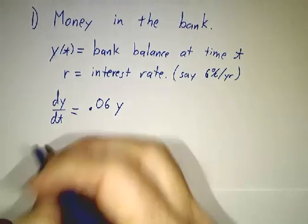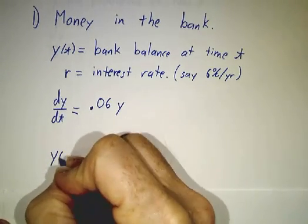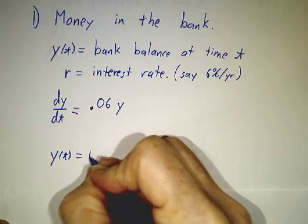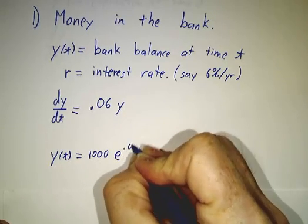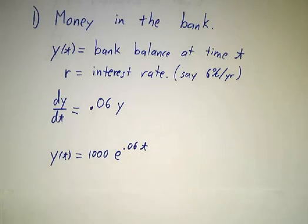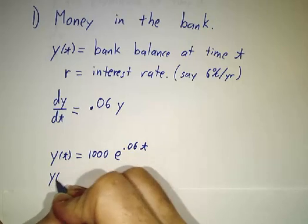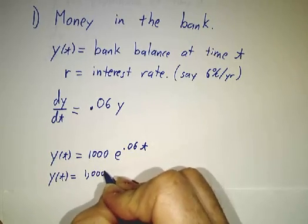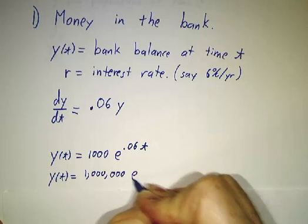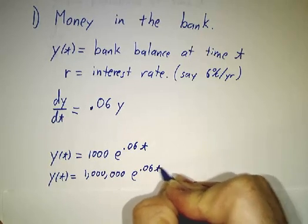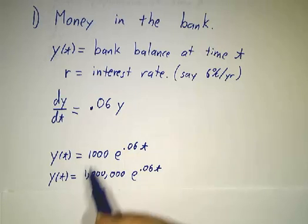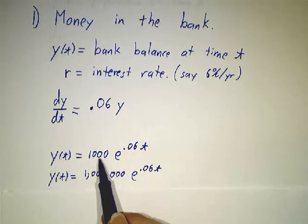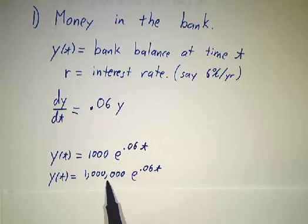And I claim that the following is a solution to the equation. And I also claim that this is also a solution to the equation. They're not the same solutions. This describes the amount of money that you would have if you started off with a thousand dollars. This describes the amount of money you would have if you started off with a million dollars.